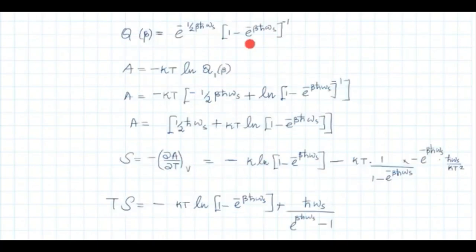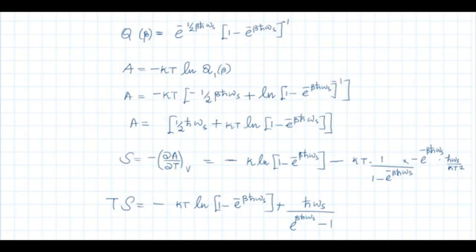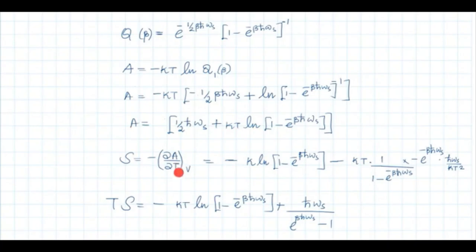Once we have the partition function, we can calculate the Helmholtz free energy: A = −kT ln q. Substituting the values, the log and exponential cancel to give A = ½ℏω_s + kT ln(1 − e^(−βℏω_s)), since log(x^b) = b·log(x) and β = 1/kT. Next, taking the partial derivative of A with respect to T gives entropy: S = −∂A/∂T.